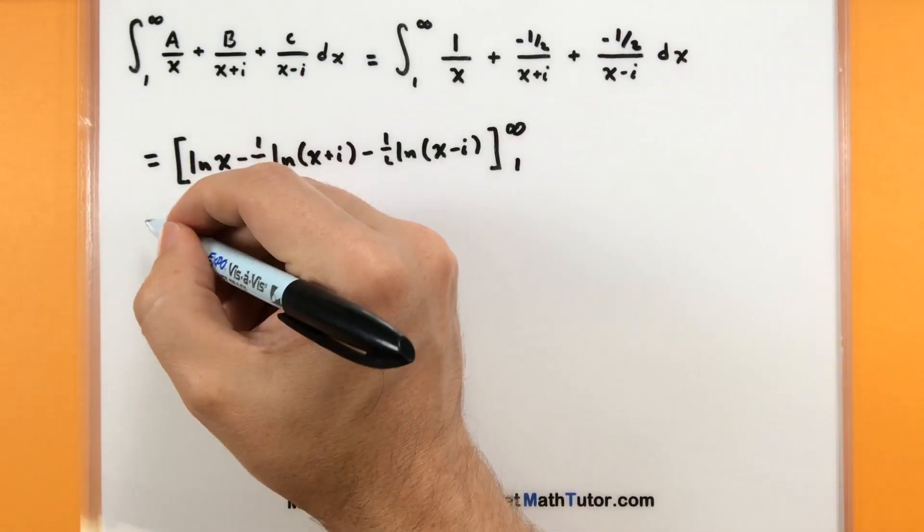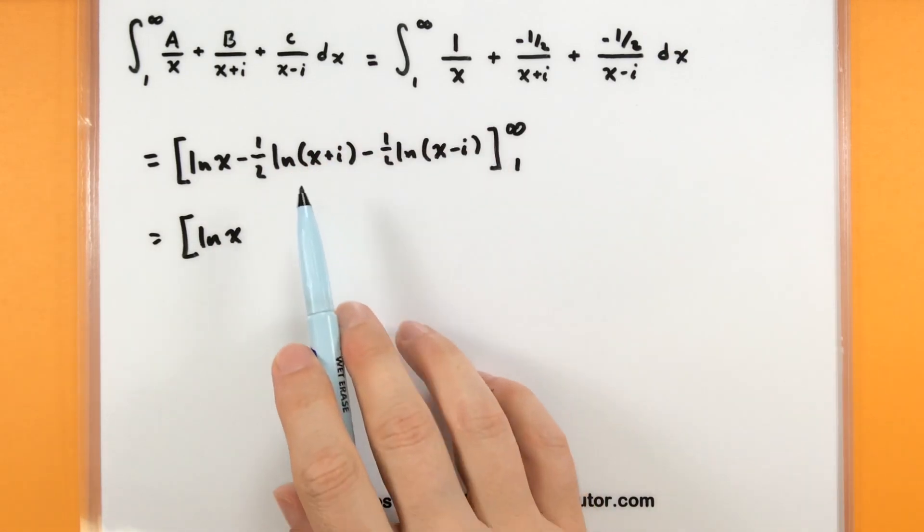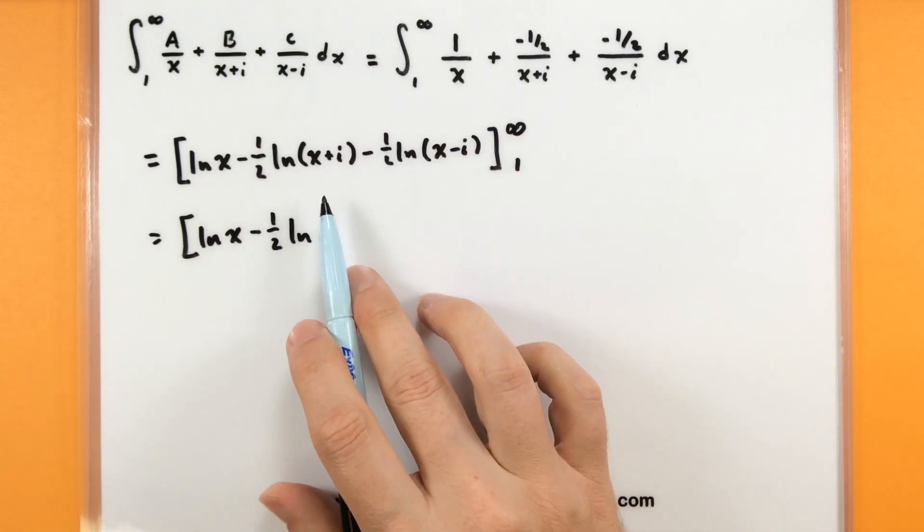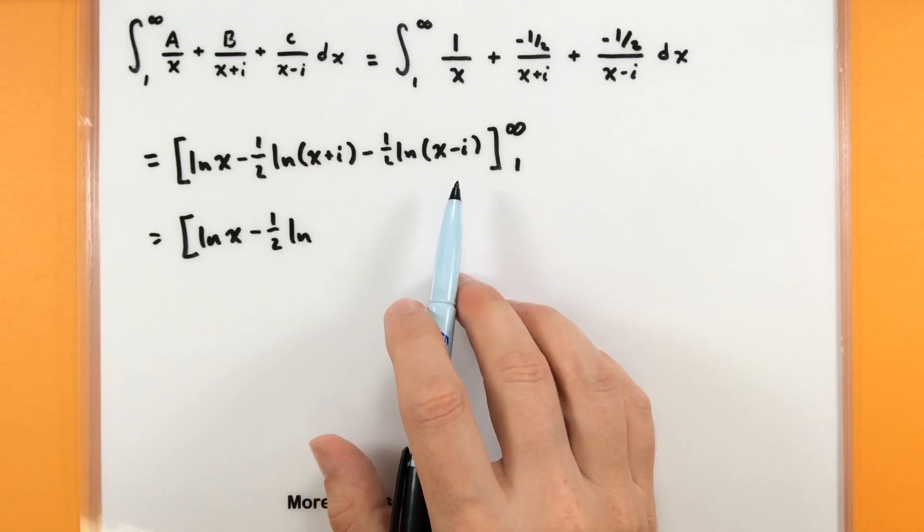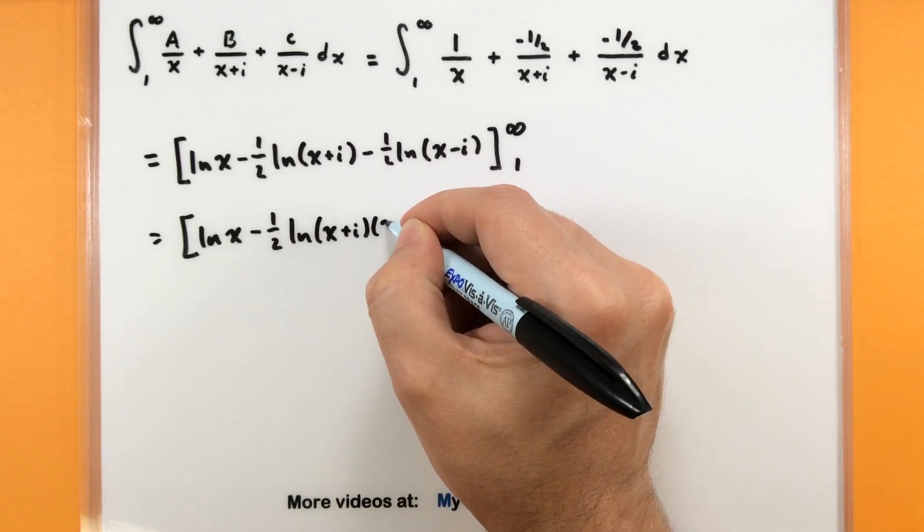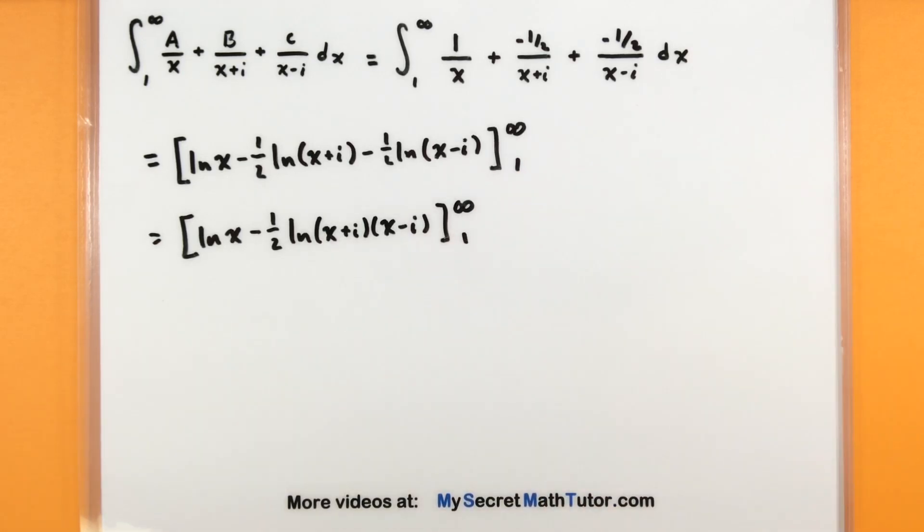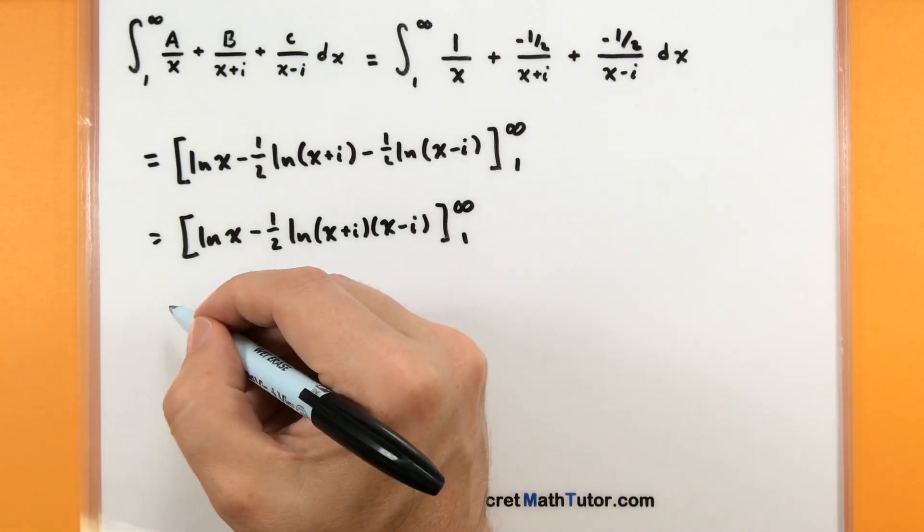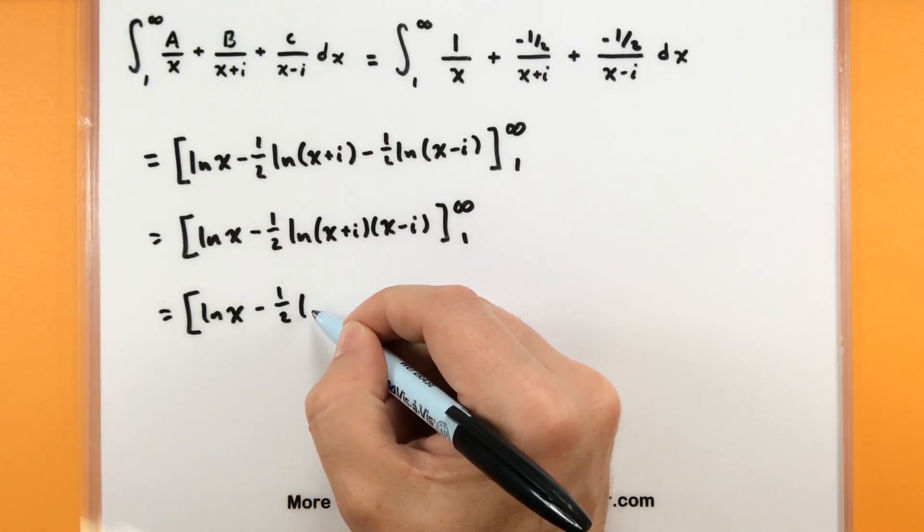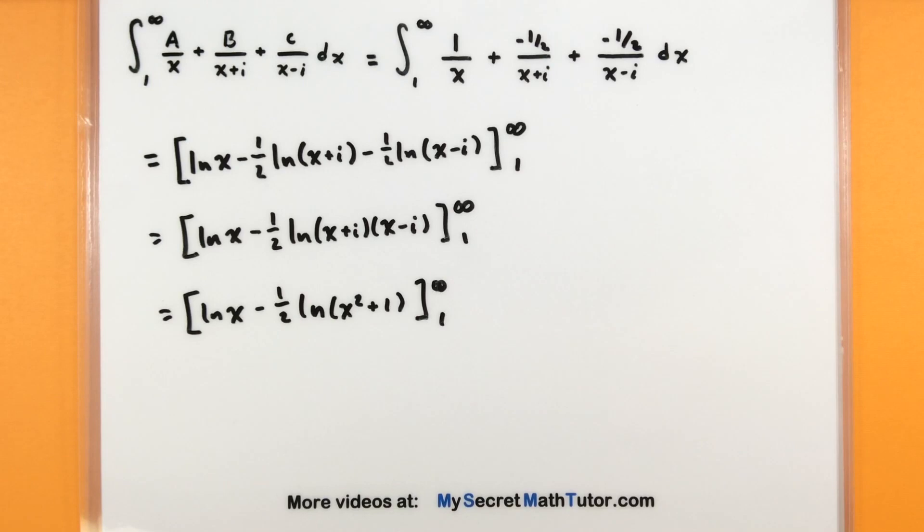So it's looking better. Now we just have to maybe combine a lot of these natural logs together so we can move on to actually finding that limit. Let's see what we can do. So nothing I really want to do with that natural log of x just yet. Both of these involve a negative one half, so maybe we'll factor that. And then we'll have a natural log of x plus i plus a natural log of x minus i. Our rules for logarithms is that if we have two logarithms added together, the insides will multiply. So we can go ahead and combine those. That's looking fantastic. We've already seen how that will combine back into an x squared plus one. So let's go ahead and do just that. So natural log of x squared plus one.